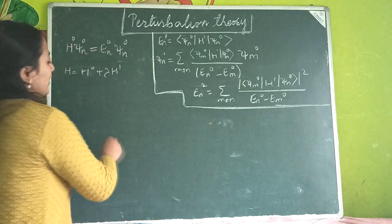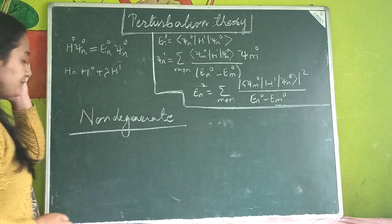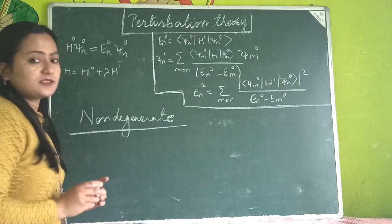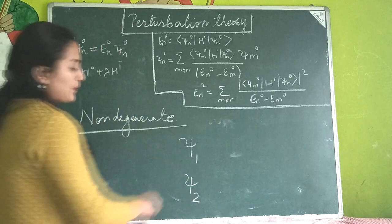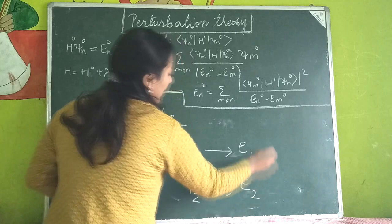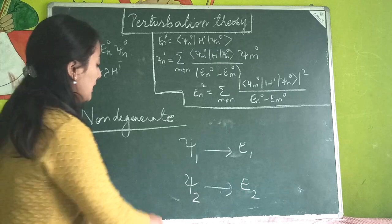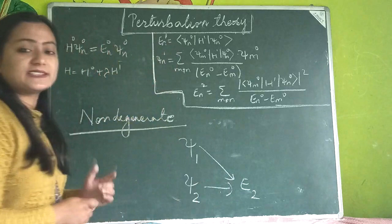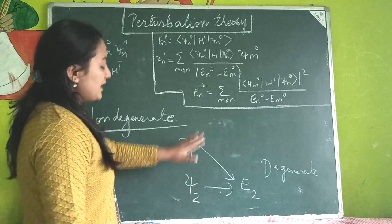Now, why do we call this theory non-degenerate? Let us understand what degeneracy is. Suppose you have two different states ψ₁ and ψ₂ with eigenvalues E₁ and E₂. If both ψ₁ and ψ₂ have unique eigenvalues, the states are non-degenerate. But if both ψ₁ and ψ₂ have the same energy eigenvalue, they are called degenerate states.